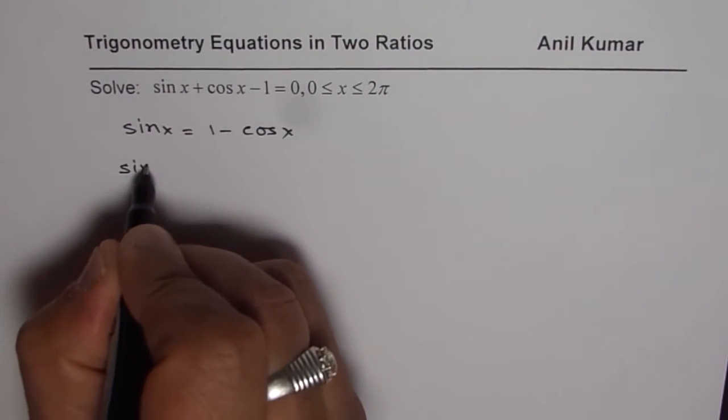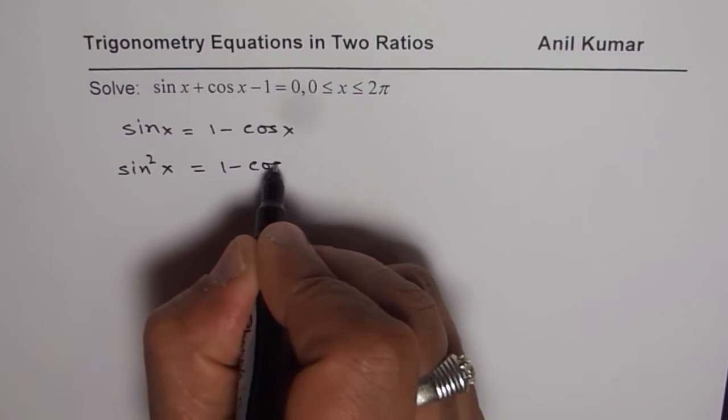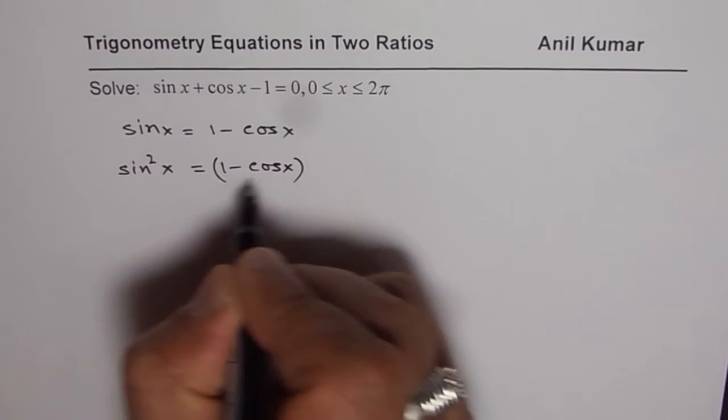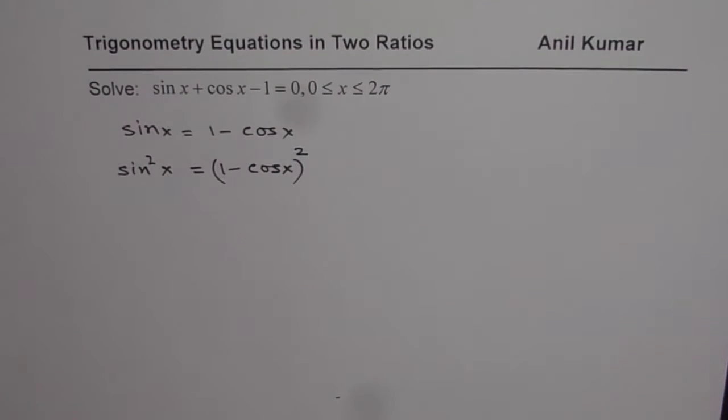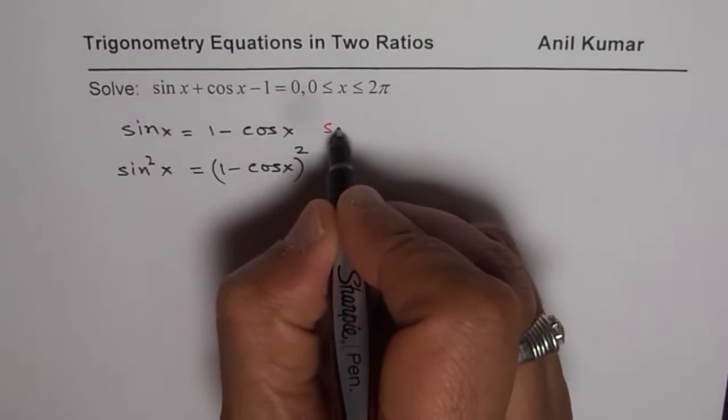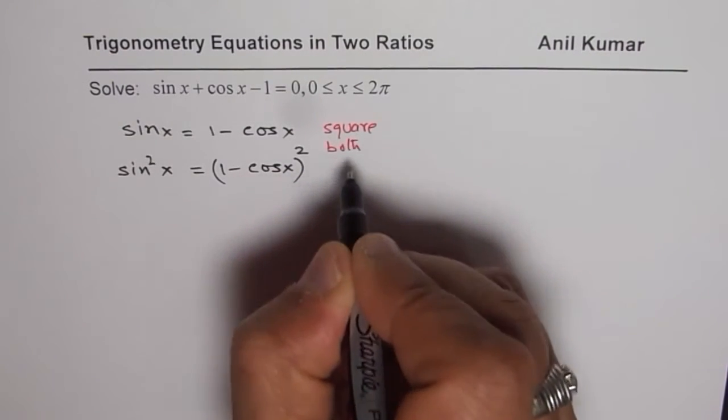So we can do sin square x equals to 1 minus cos x whole square. Now once we square we can actually write equation in the form of quadratic in one ratio. So we square both sides. But remember one thing.